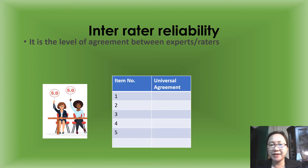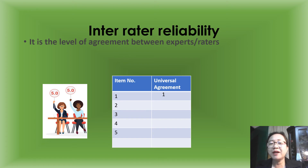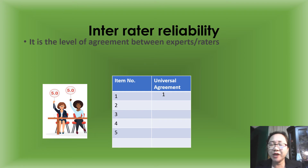We will make a table. Since the two raters both give a score of 5, in item number 1 we give a score of 1. Remember our rule in validity of questionnaire — the same rule applies. If 100% of the experts agree, we give a value of 1.